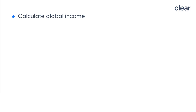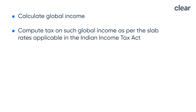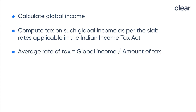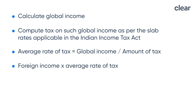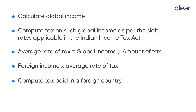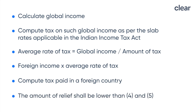If there is a DTAA with the country, tax relief can be claimed under Section 90. Steps to compute double taxation relief: first, calculate global income by adding Indian income and foreign income. Next, compute tax on such global income as per the slab rates under the Indian Income Tax Act. Then calculate the average tax rate, which is the amount of tax divided by global income. Next, compute an amount by multiplying foreign income with this average rate of tax. Then compute the tax paid in the foreign country. The relief shall be the lower of step 4 and step 5.